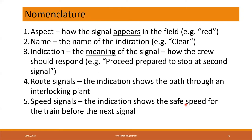Let's talk about nomenclature - we've got to know the nomenclature because otherwise the rest of this isn't going to make much sense. An aspect is how the signal appears in the field - for example, it's red. The name is the name of the indication - for example, clear, or if you're using route signaling, something like normal approach, or normal if you're using speed signaling. The point is that the indications often have different names for different railroads.